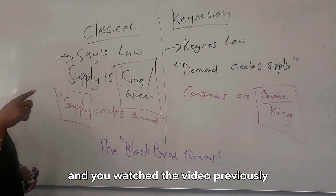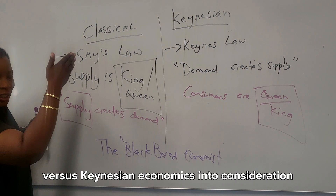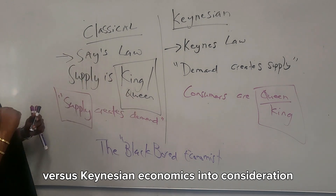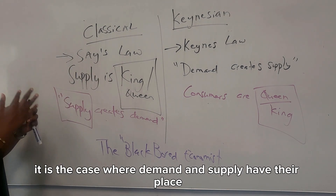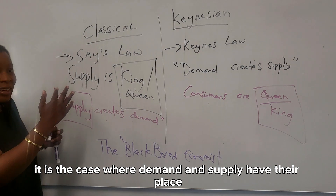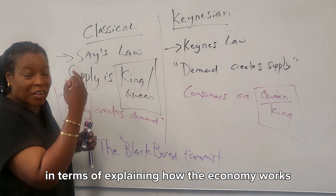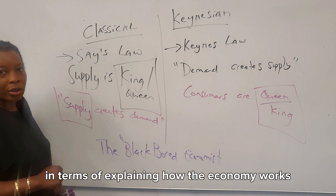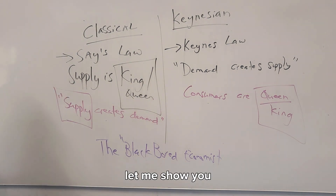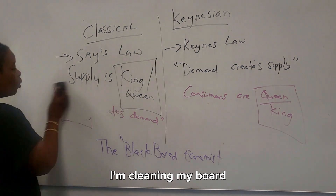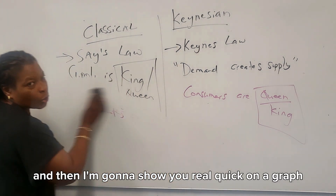When you watch the previous video, once we take classical versus Keynesian economics into consideration, demand and supply both have their place in explaining how the economy works. Let me show you how we put that on a graph.